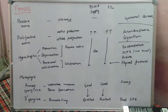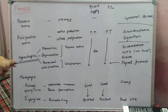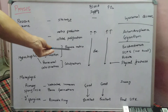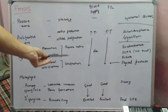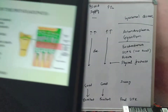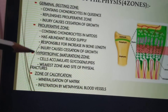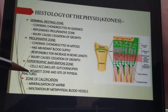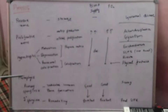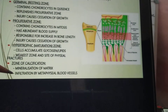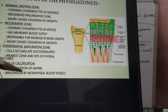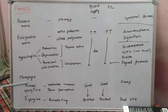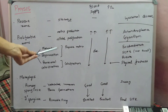The third zone is the hypertrophic zone, further divided into maturation, degeneration, and provisional calcification. In the first two sub-zones, preparation of the matrix occurs, whereas in the third sub-zone the actual calcification occurs. In the hypertrophic zone, cells accumulate glycogen and lipids. It is the weakest zone and is the site of physeal fractures. In the zone of provisional calcification, mineralization of the matrix occurs and there is infiltration of metaphyseal blood vessels.